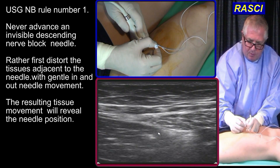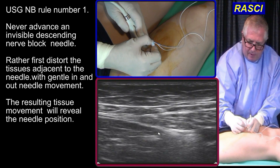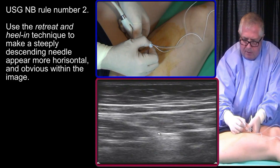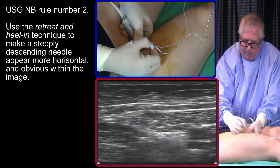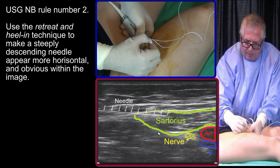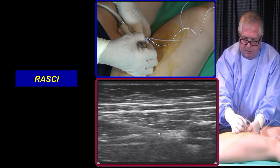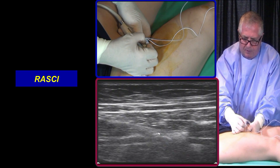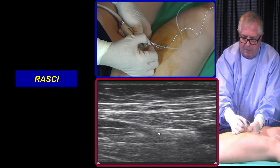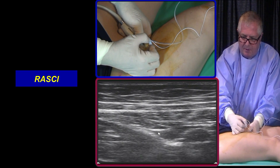You can see from the tissue distortion where my needle is. I'm going to penetrate the sartorius muscle. I'm through that covering fascia. I'm going to do a little bit of heel and retreat — just changing my grip on this transducer — this will make my needle appear more horizontal. I'm going to pop through this last fascia. Inject. See how it surrounds the artery.